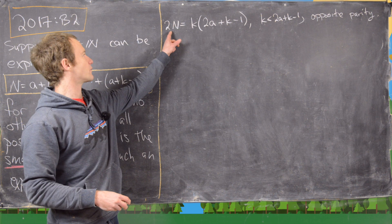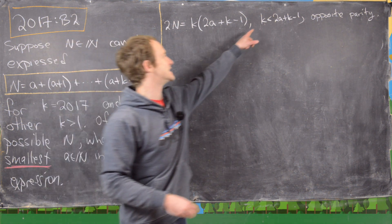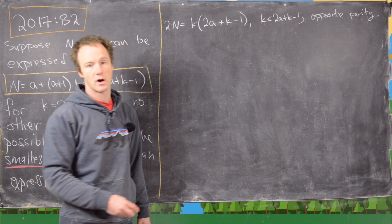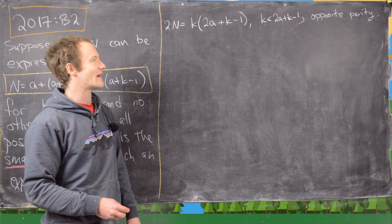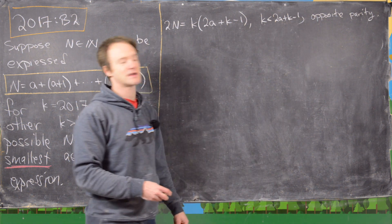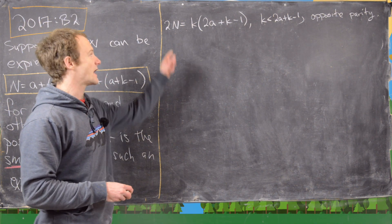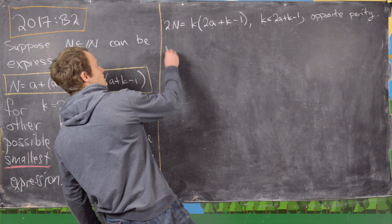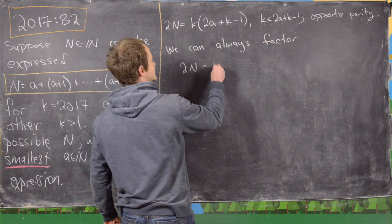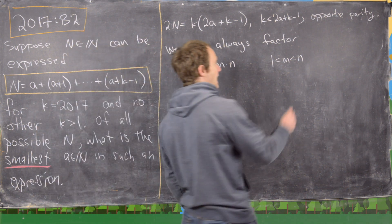We ended the last board with writing 2n in the form k times the quantity 2a plus k minus 1. Now I want to make some observations: k is clearly less than 2a plus k minus 1, since a is a natural number — bigger than or equal to 1. Also, these two factors have opposite parity. If k is even then k minus 1 is odd, which makes 2a plus k minus 1 also odd, and vice versa. So we can always factor 2n as m times n where 1 is less than m is less than n and they have opposite parity.